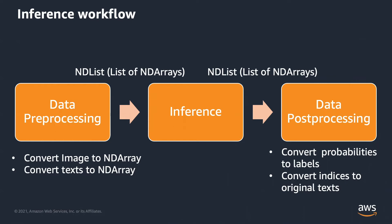Let's use image classification as an example. The inference step in the middle can only take NDArray in and NDArray out, because in the deep learning world, the model doesn't understand the image.